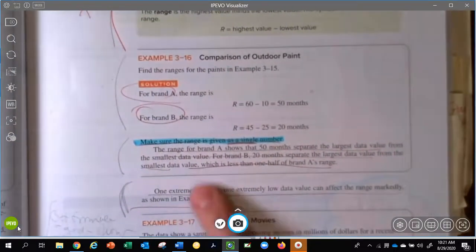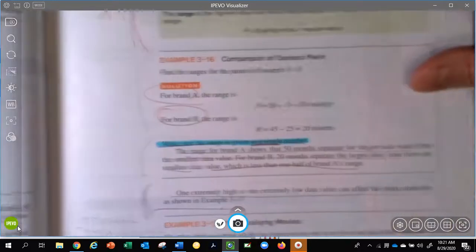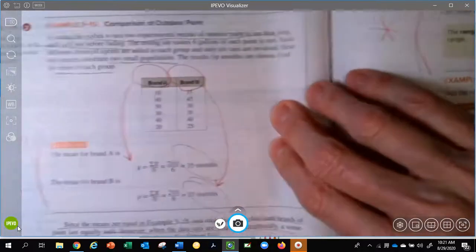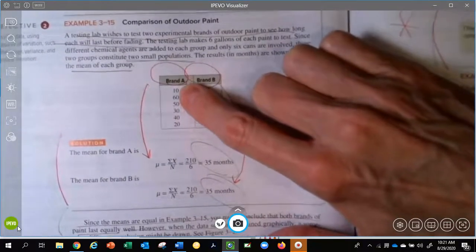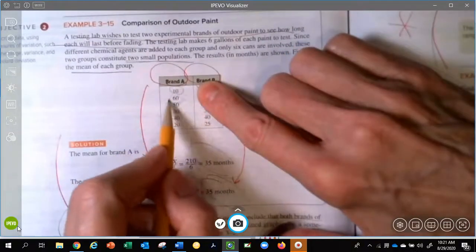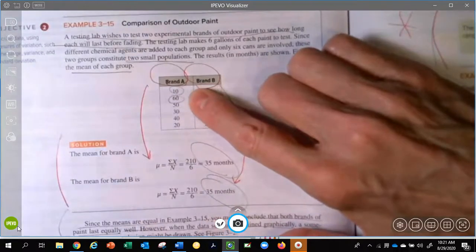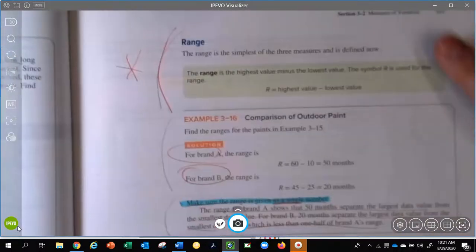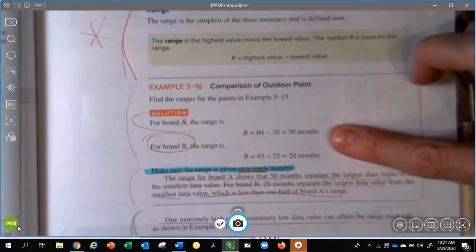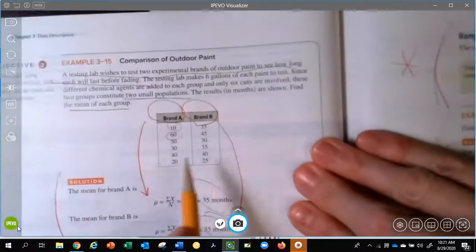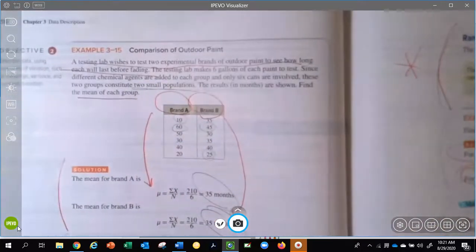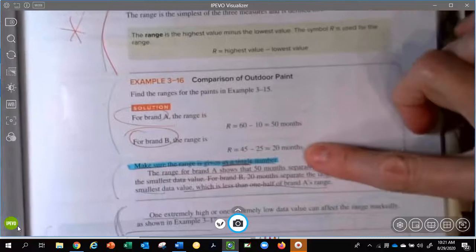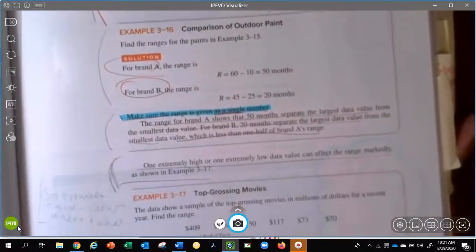So Example 3-16 does that. It takes the two amounts of the days that the cans are lasting before fading. And like this one, the lowest is 10 and the highest is 60. So you subtract them and you get a range of 50, which is exactly what they did here, that they got a range of 50 months.